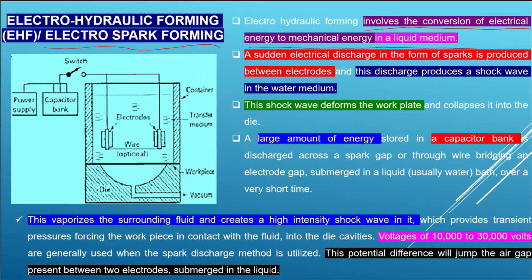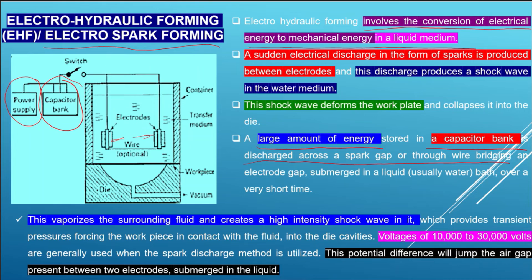A large amount of energy is stored in a capacitor bank, which uses a power supply. This large amount of energy stored in the capacitor bank is discharged across a spark gap, through wire bridging and an electrode gap. The entire process takes place with the electrodes submerged in a liquid medium such as water.